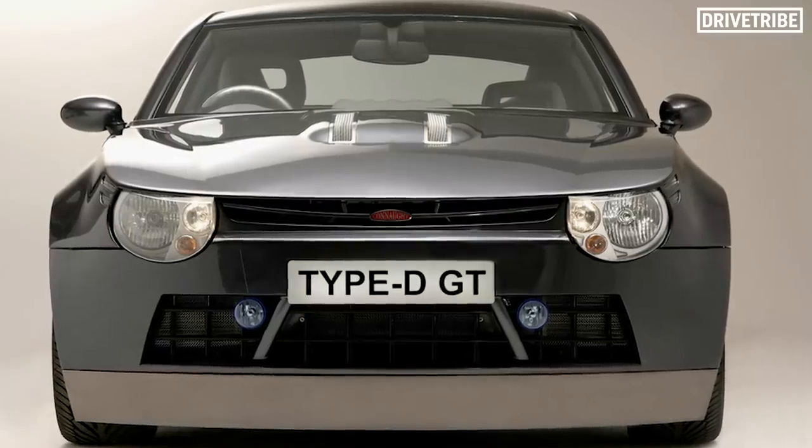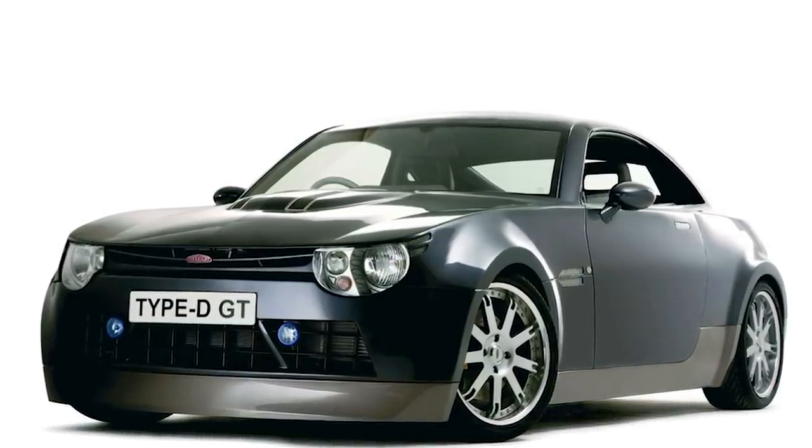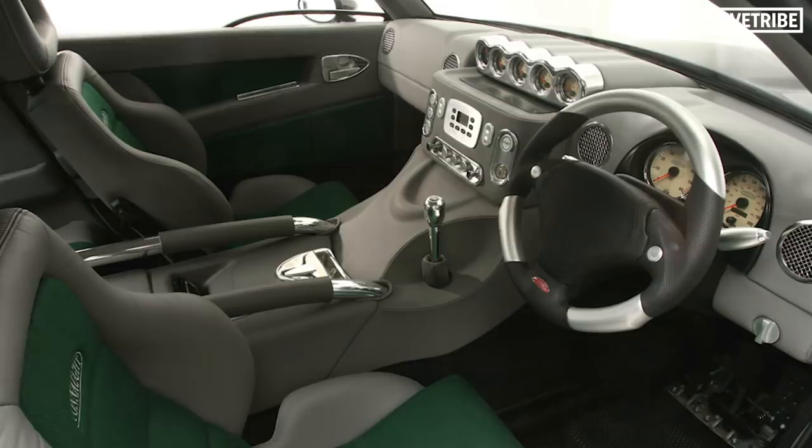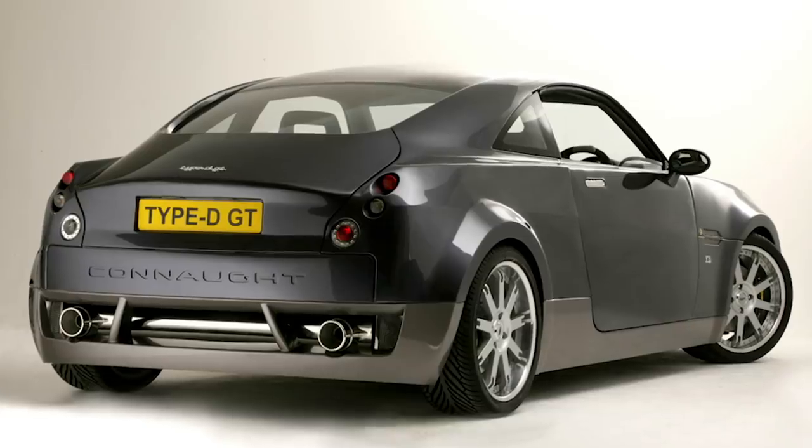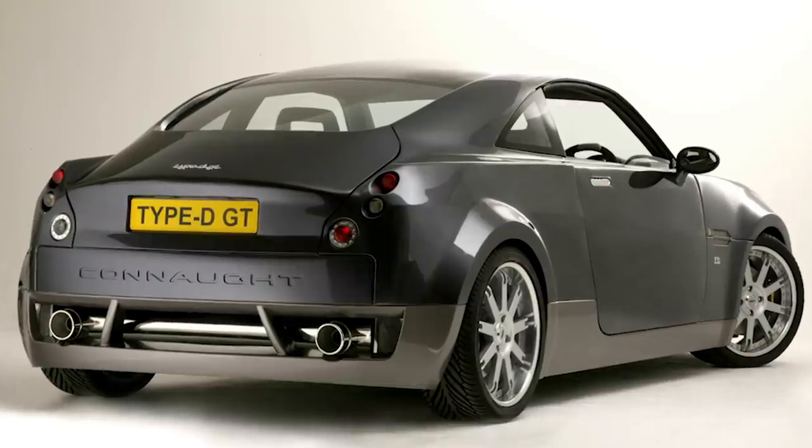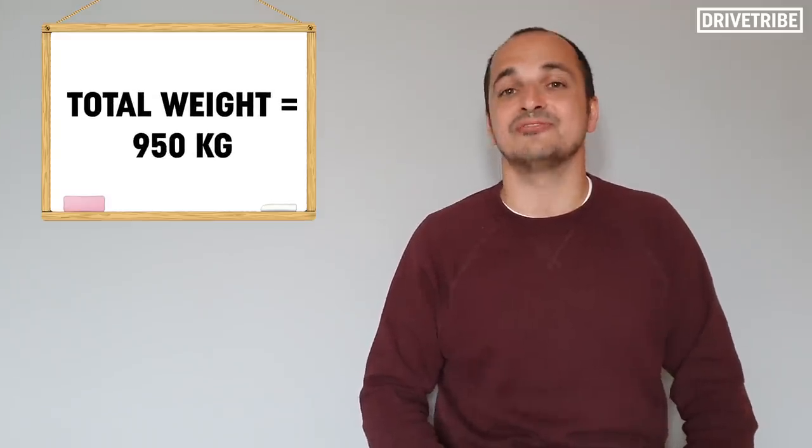The engine was set back as far in the engine bay as possible to get the best weight distribution. It was actually encroaching into the cockpit to get it as central as possible, very much see it as a front mid-engine sports car. And the whole package came in at under a tonne, 950 kilograms.